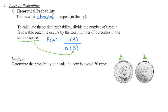If we have a fair coin, meaning there is an equally likely chance of flipping either a head or a tail, what is the probability of getting heads if we toss the coin 50 times? In theory, 25 of those flips should come up as heads. One half of the time we should be flipping heads, and one half of the time we would be flipping tails.